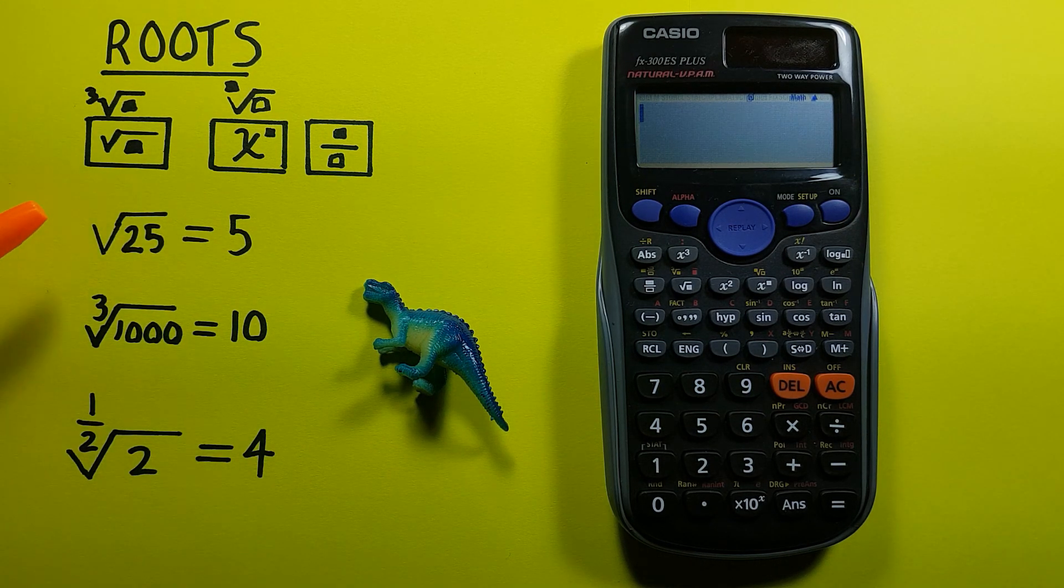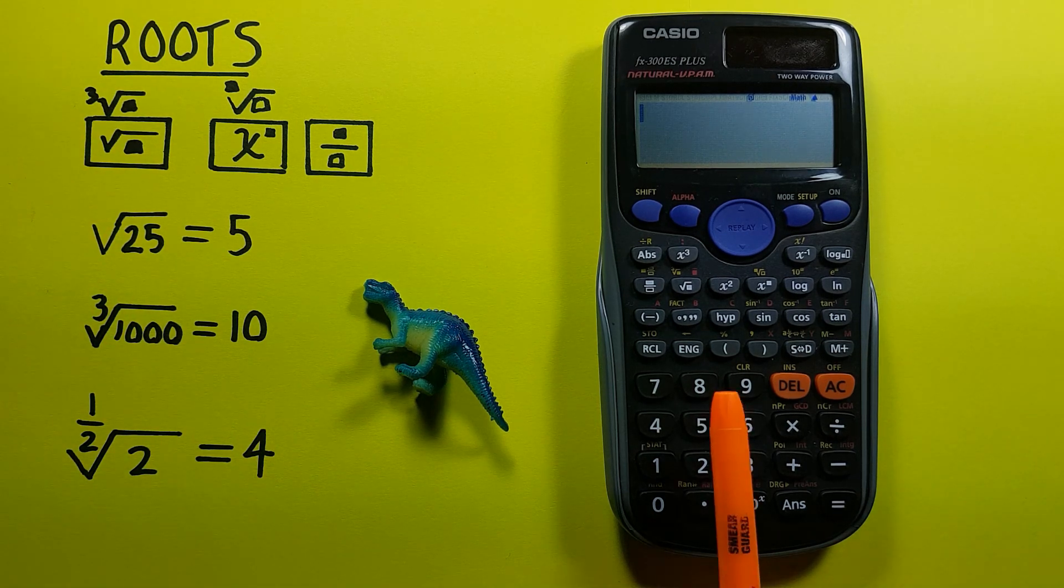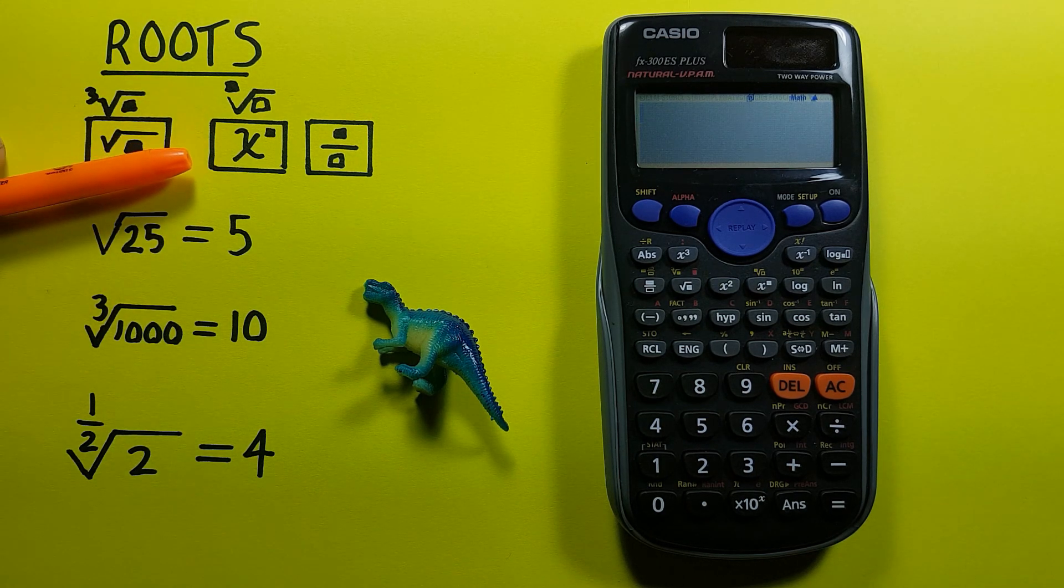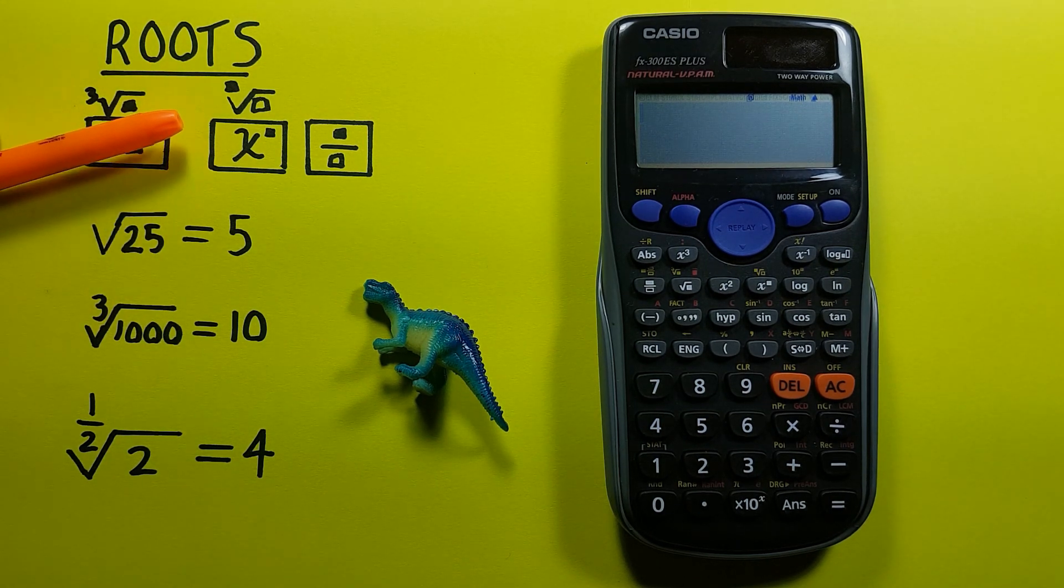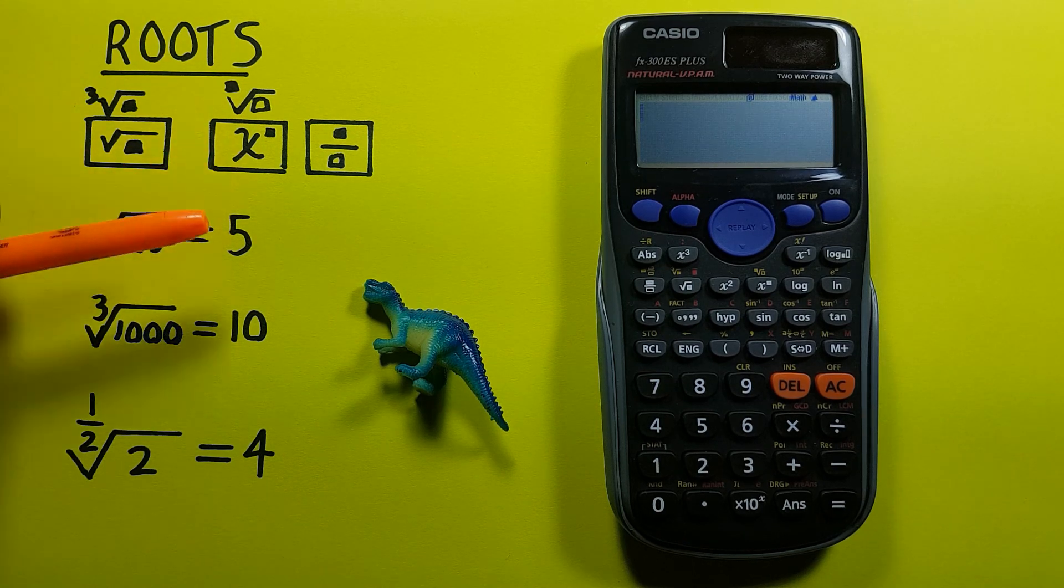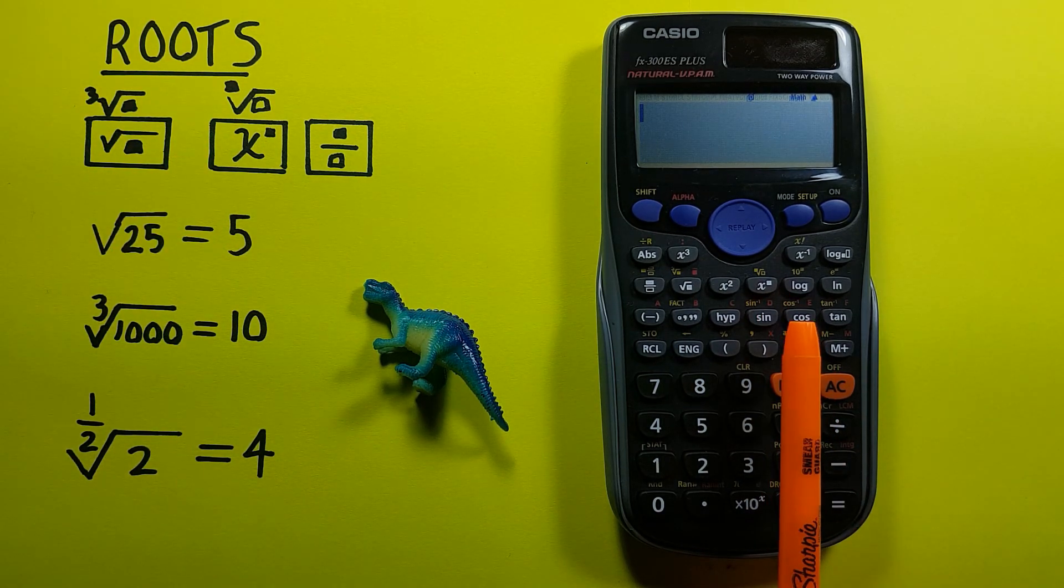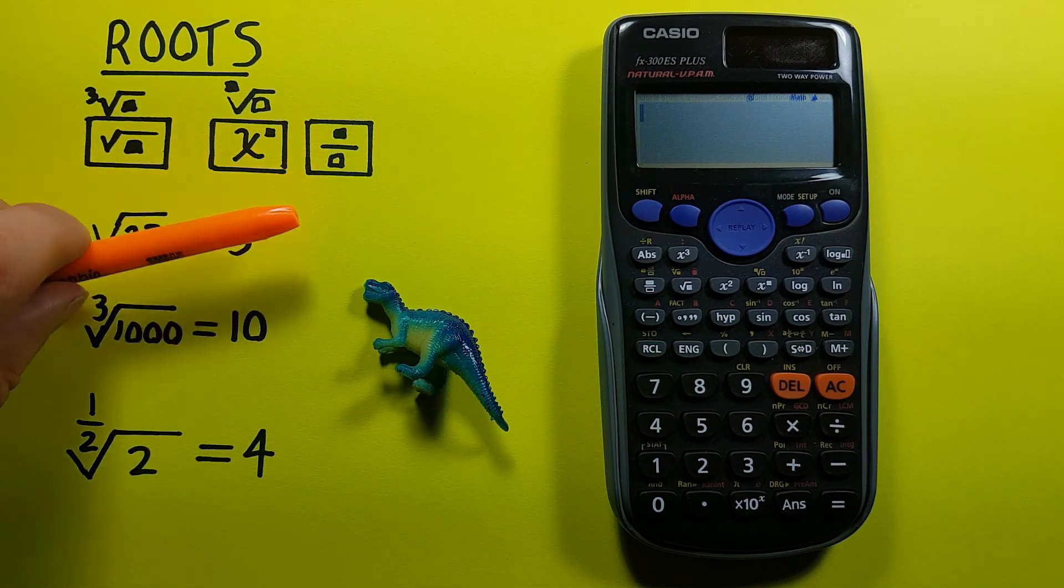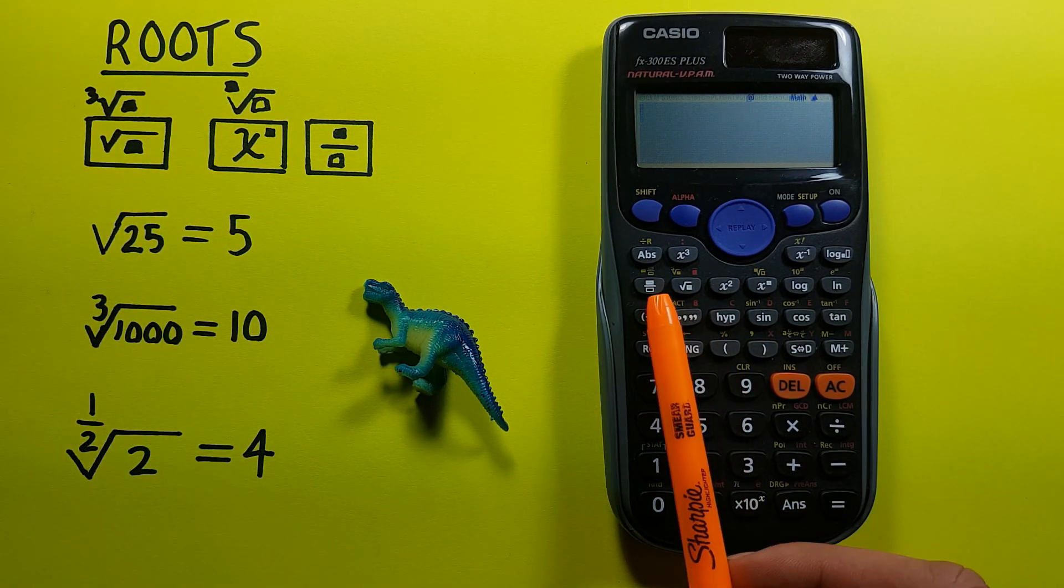To do that we'll be using this square root key that looks like this and is located here, as well as the miscellaneous exponent key that looks like this and has a secondary function of a miscellaneous root that looks like this and is located here. We'll also be using the fraction key that looks like this and it's located here.